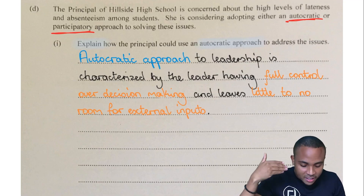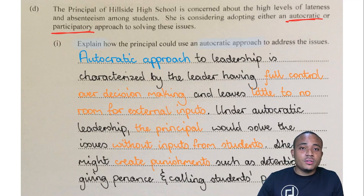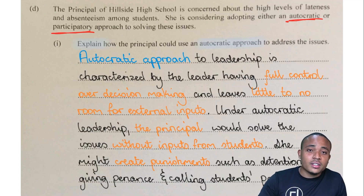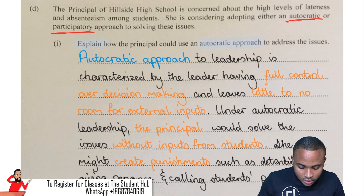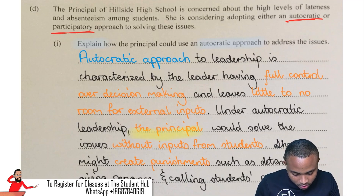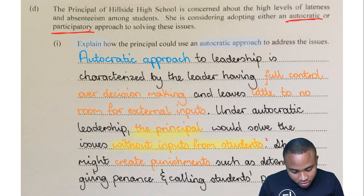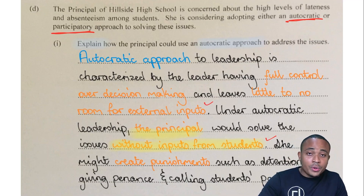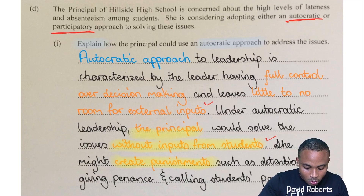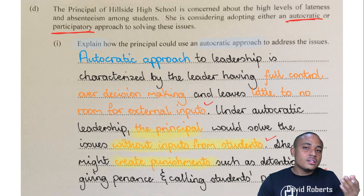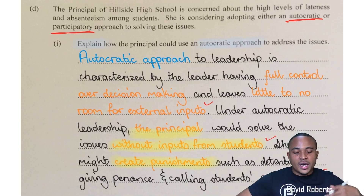Now let's explain autocratic leadership applied to the question. After giving the definition — that is the first mark — under autocratic leadership, the principal would solve these issues without the input of the students. That is the second mark. Then for the third mark, she might create punishments such as detention, giving penance, and calling parents. And that is how you get three marks for the explanation.